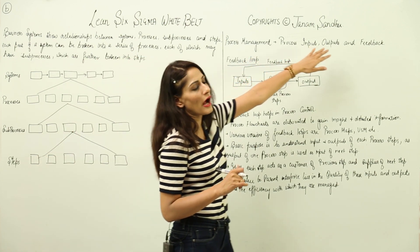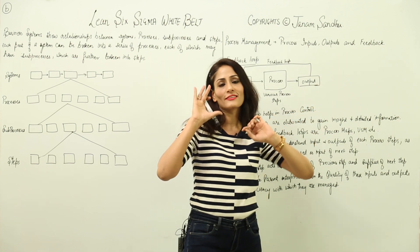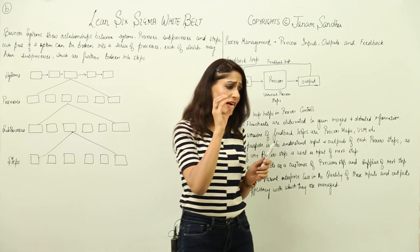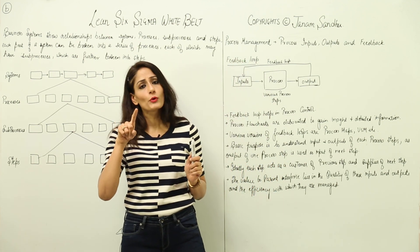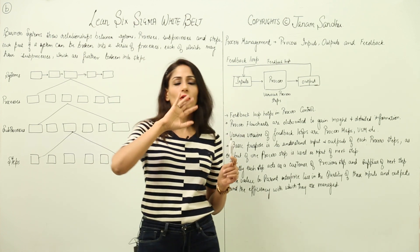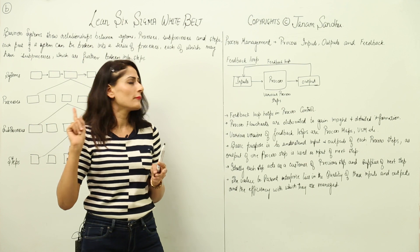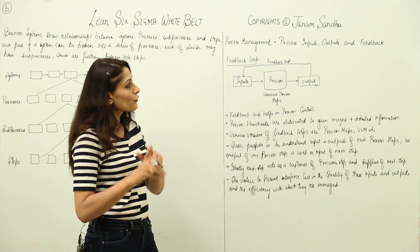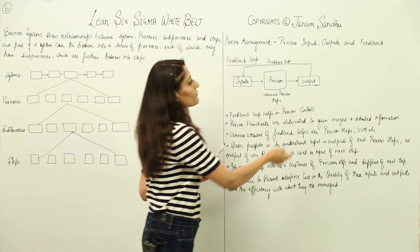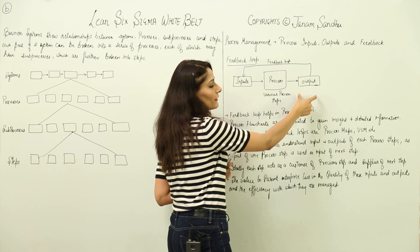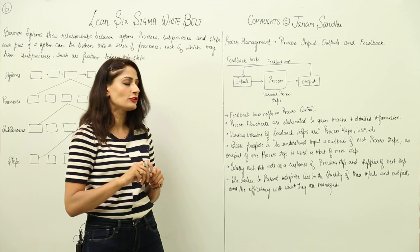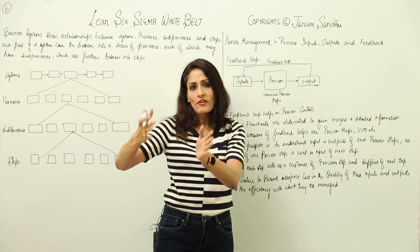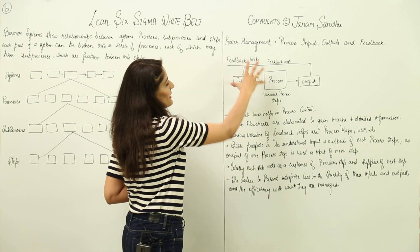Coming to process management: basically, it is understanding the process inputs, outputs, and feedback — what a process gives and what the inputs are. You need to understand the feedback loop. I gave you basic information about the feedback loop when I talked about Walter Shewhart in Section 1 on the evolution of quality. Right there I told you that he defined a system where if we start understanding the outputs, we can use that data to improve the inputs and the processes.